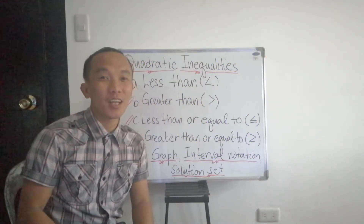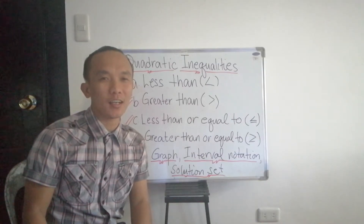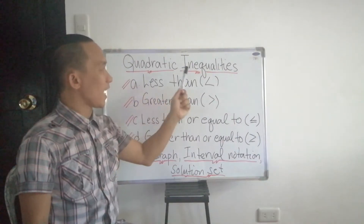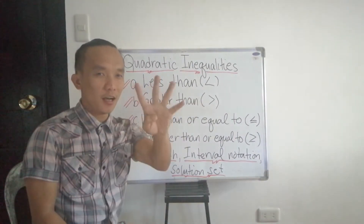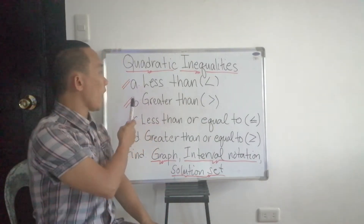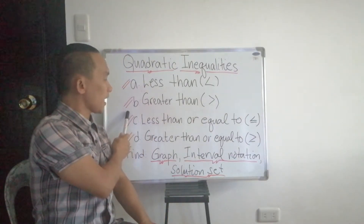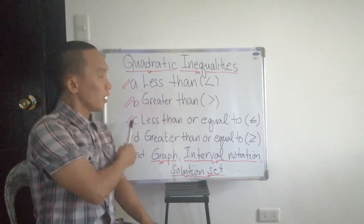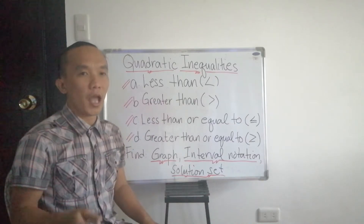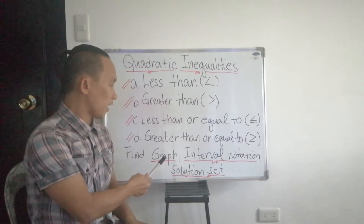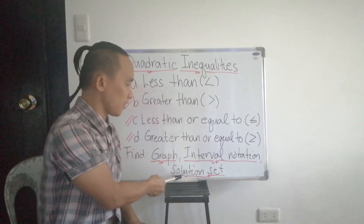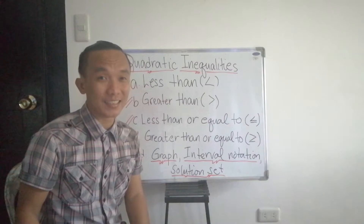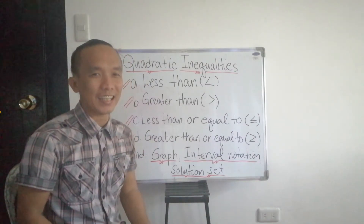Hi there classmates, welcome again to a new lesson about mathematics. On this lesson we are going to discuss quadratic inequalities. There are four types of quadratic inequalities: less than, greater than, less than or equal to, and greater than or equal to. We are going to find their graph, their interval notation, and their solution set.